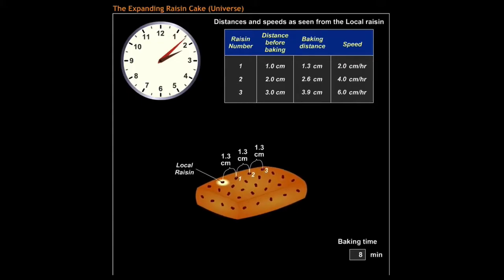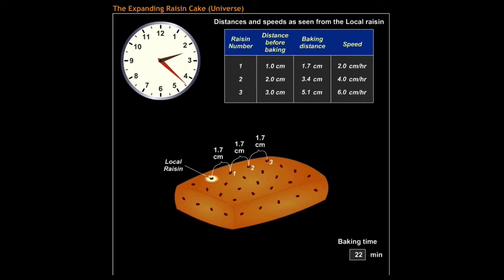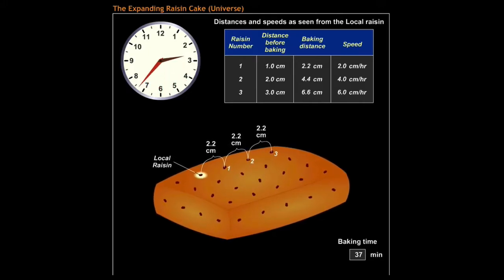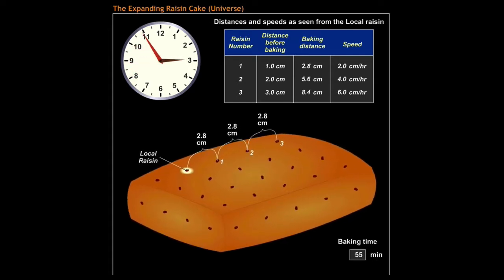We now watch the cake expand for one hour. The raisins move apart as the cake expands, and the distances between them grow from one centimeter to three centimeters by the end of the hour. Viewed from outside the cake, the expansion looks uniform everywhere.